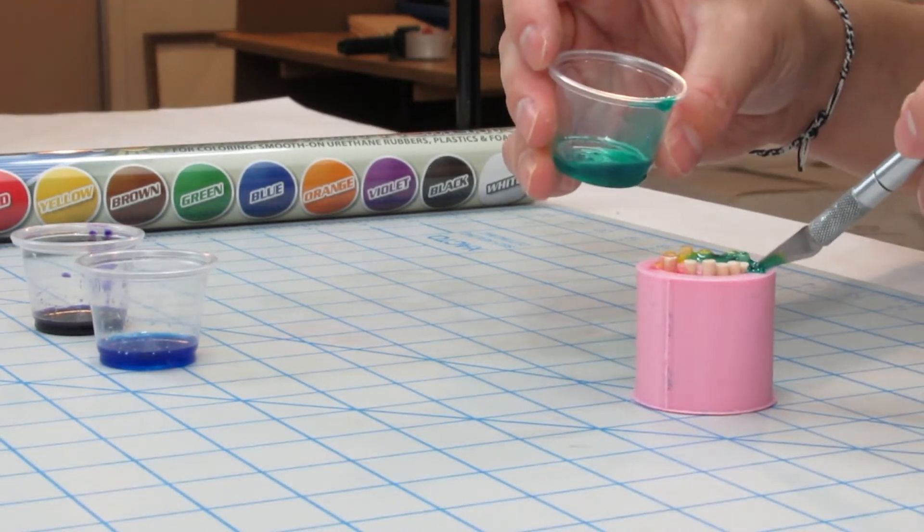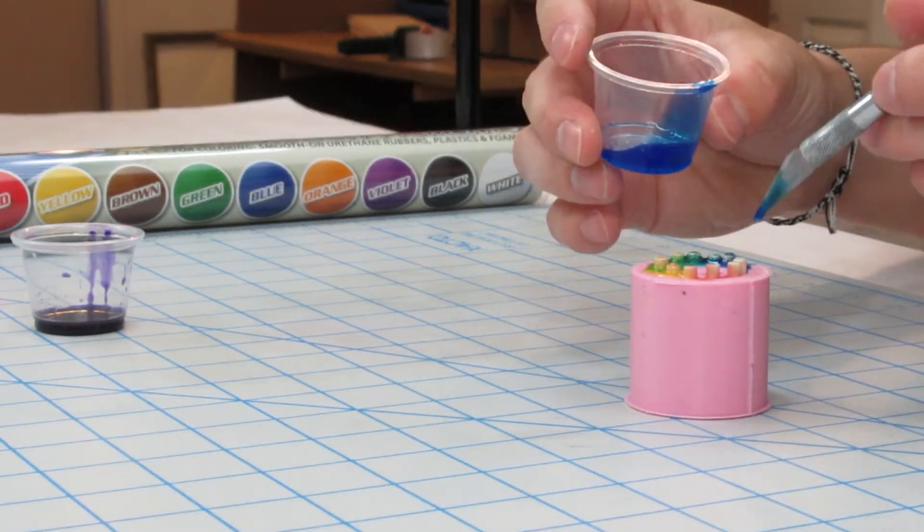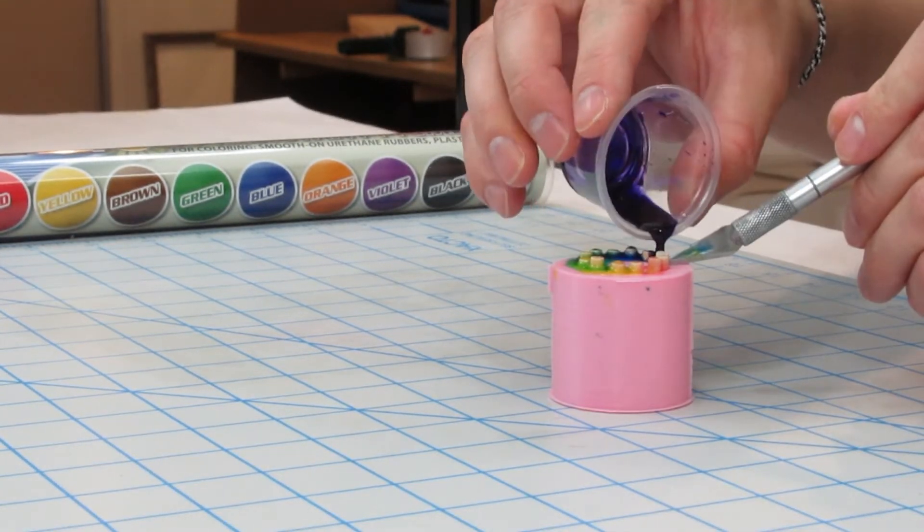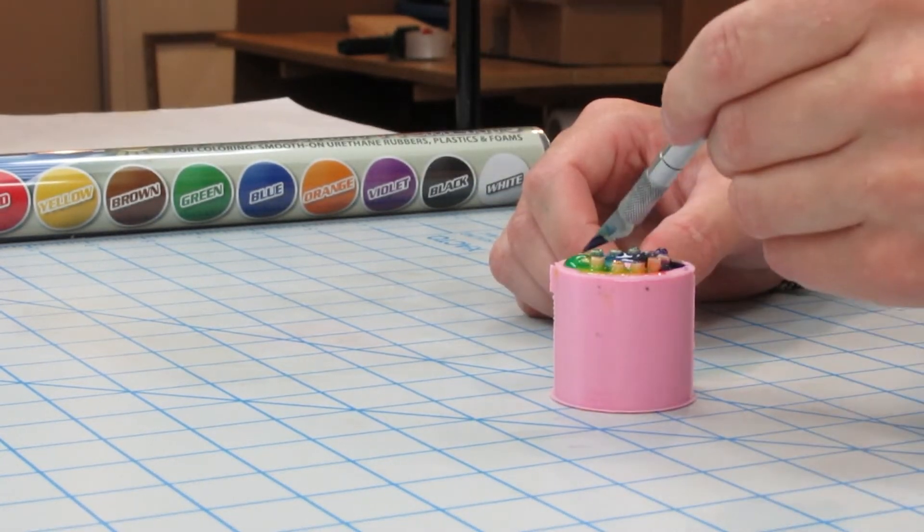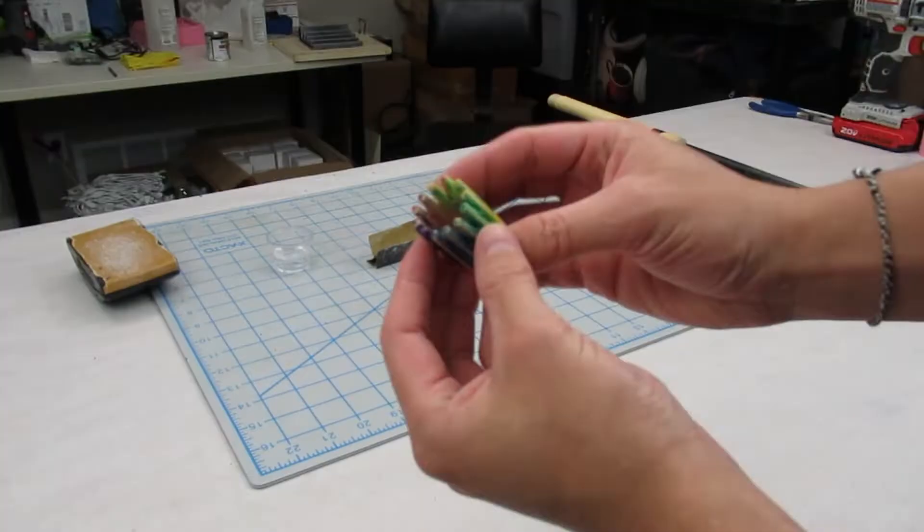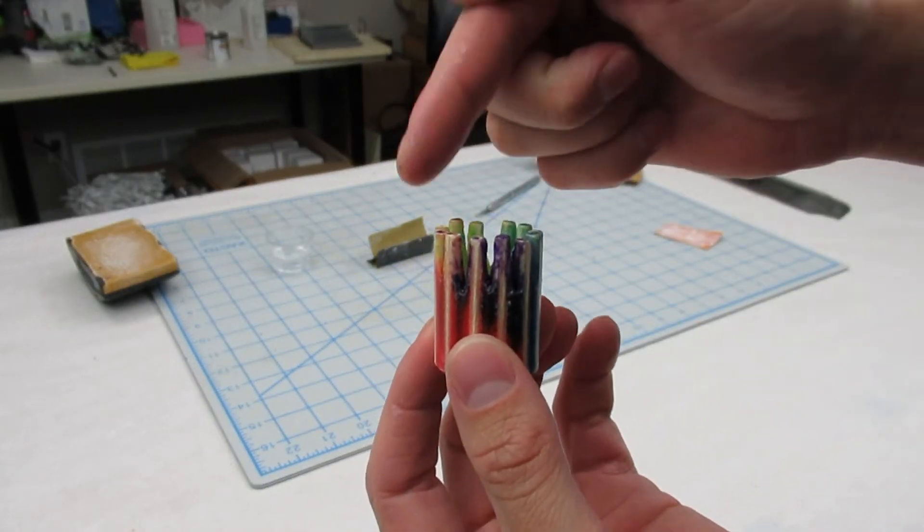In hindsight, I should have used a syringe to inject each color. You'll see why in a few seconds. I had a bit too many air gaps from pouring. I sanded it down as good as possible.